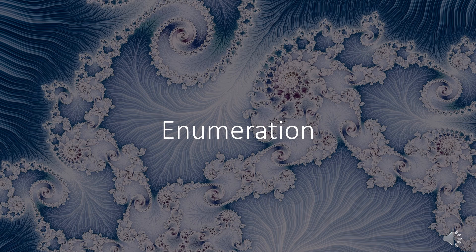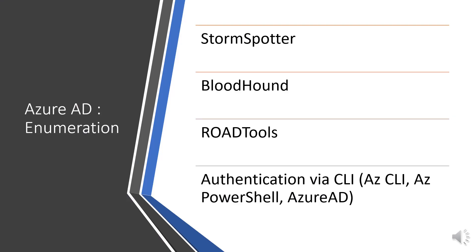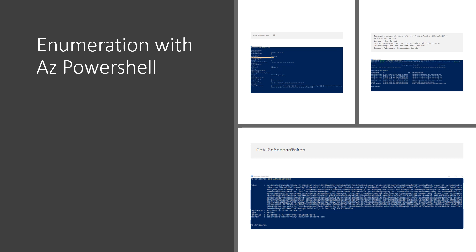After initial access is obtained in Azure AD belonging to the target organization, the first goal is information gathering and enumeration. The following tools can be used: StormSpotter, BloodHound, Raw tools, Az CLI, Az PowerShell, and Azure AD module. Enumeration with Azure PowerShell includes User Enumeration, Group Enumeration, and getting a new access token using the relevant commands.